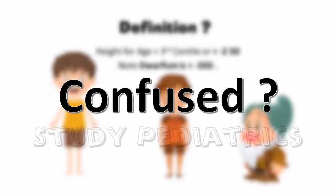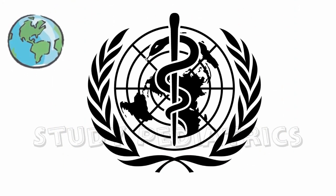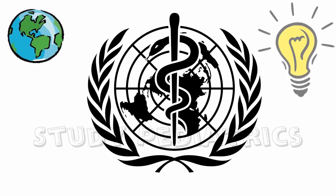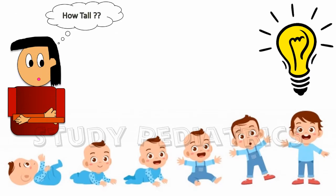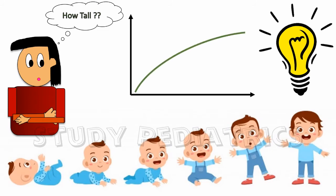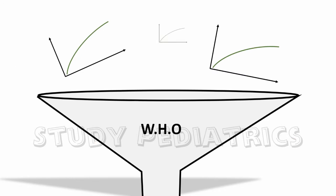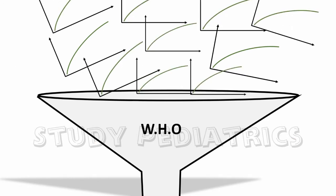Understanding these terms can be tricky and we often get confused between them. Let's see how international agencies came to a conclusion of keeping these values. When a child grows, parents are often curious to know how tall their child will be, and many such parents record their child's growth values — for example, 75 cm at one year, 87.5 cm at two years, and so on. What WHO did was collect data from registered parents under a common cohort, in thousands or lakhs, and later funneled all that data into what we see today as growth charts.